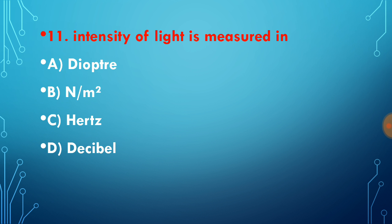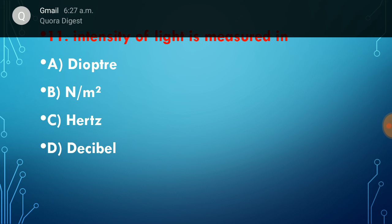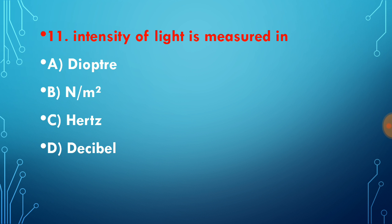Question number 11: intensity of sound is measured in decibels. Hertz is unit of frequency, and newton per meter square is unit of pressure. Diopter is unit of power of a lens.